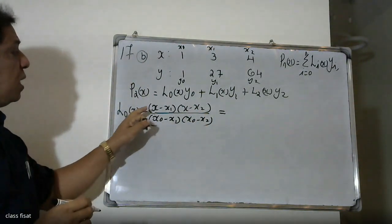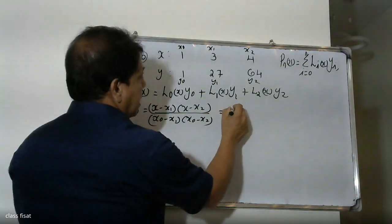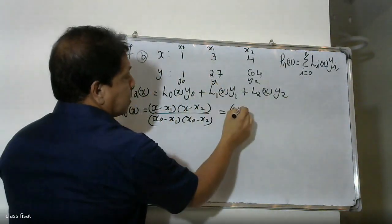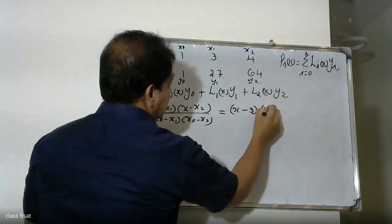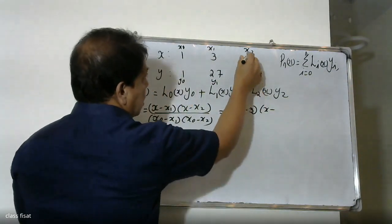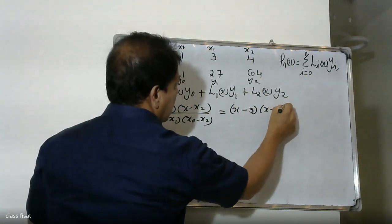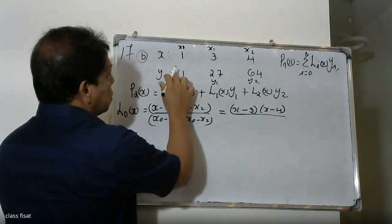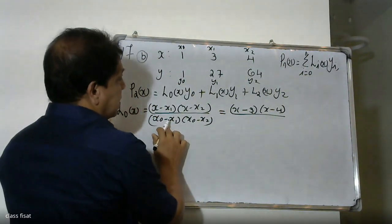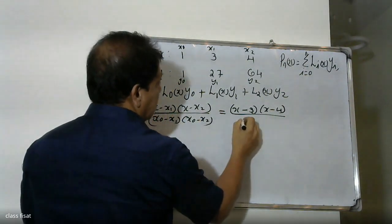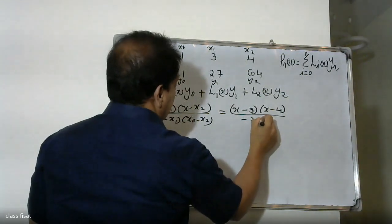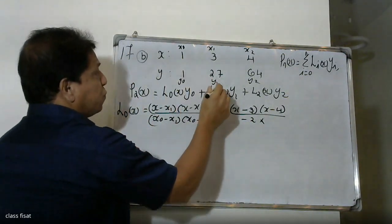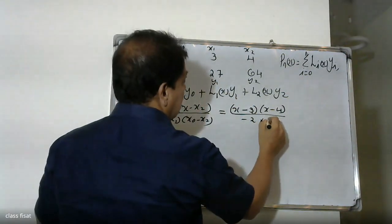In this formula, x1 is 3, x2 is 4, and x0 is 1. For L0(x), the numerator is x minus x1 times x minus x2, which is x minus 3 times x minus 4. The denominator uses x0 minus x1, which is 1 minus 3, and x0 minus x2, which is 1 minus 4.